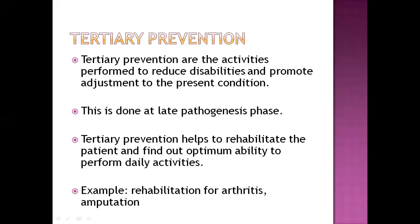Optimum ability is the ability to perform daily activities as normally as possible. So in tertiary prevention, we basically rehabilitate the patient. Examples include rehabilitation for arthritis, rehabilitation for amputation, and many other diseases.